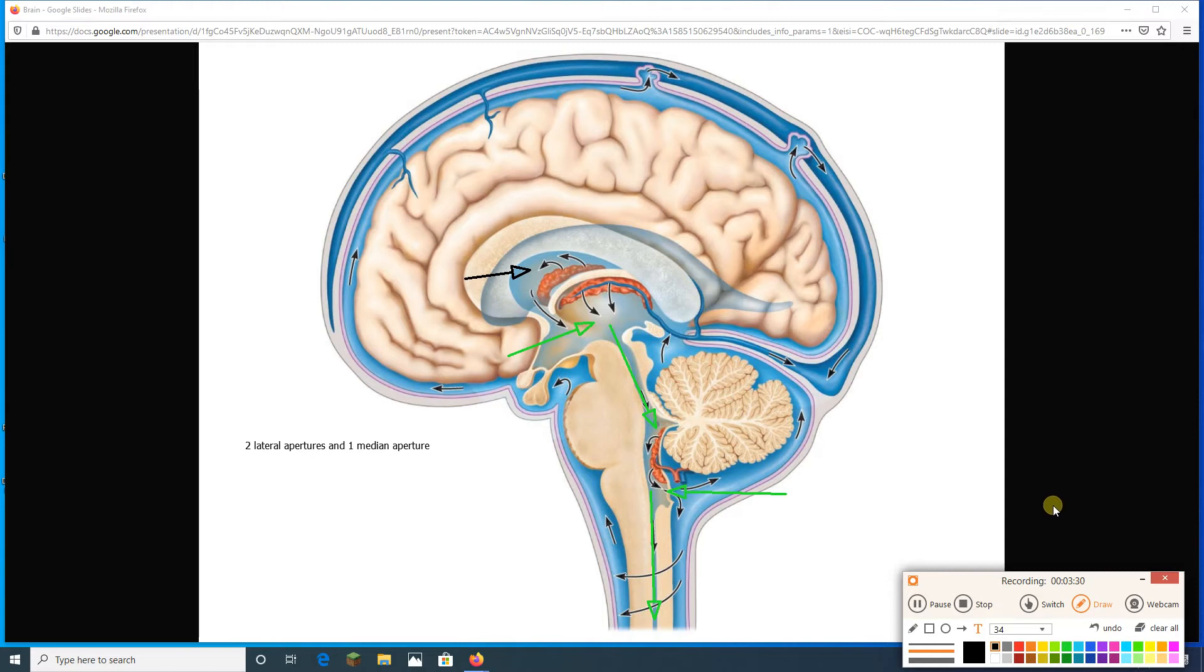All right. Now, so those apertures are getting us into the CSF, into the subarachnoid space, and we can go around the spinal cord, down and front, behind the spinal cord, around and behind the brain. Right in here, in here, in here.